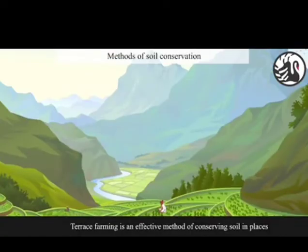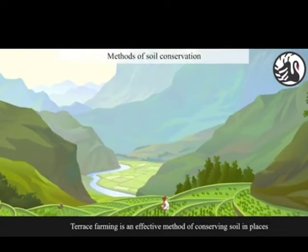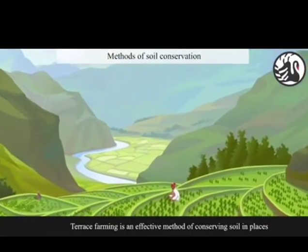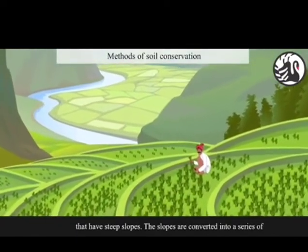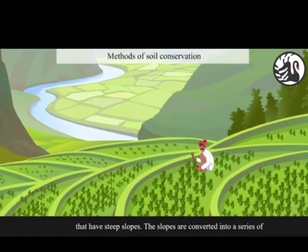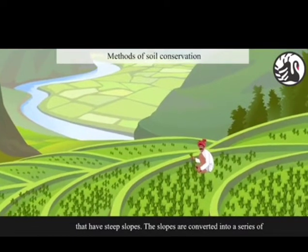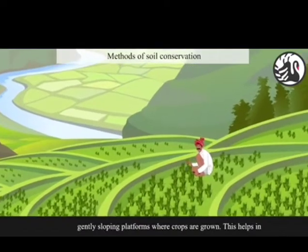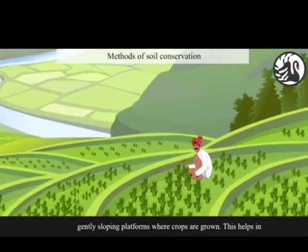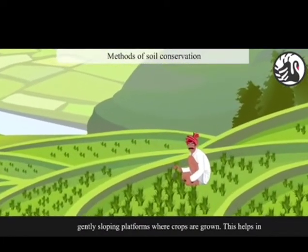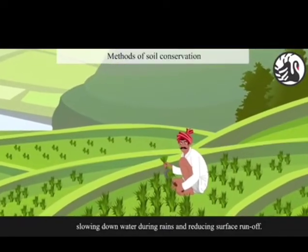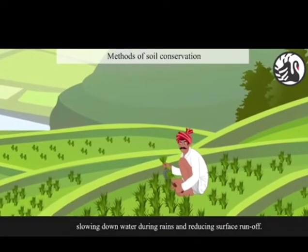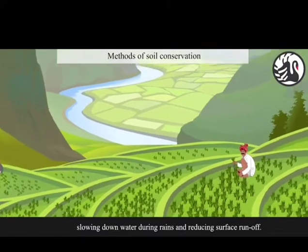Terrace farming is an effective method of conserving soil in places that have steep slopes. The slopes are converted into a series of gently sloping platforms where crops are grown. This helps in slowing down water during rains and reducing surface runoff.